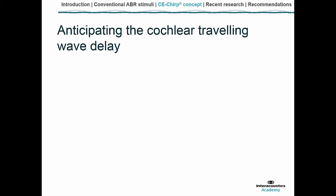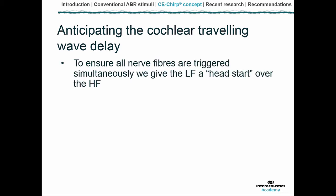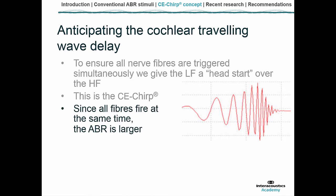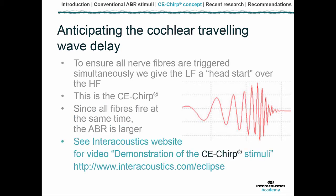The CE chirp was developed by Klaus Ebeling and Mani Don, who used the cochlear design as the basis of their modeling to compensate for temporal delays. It does this by something conceptually simple: as the traveling wave takes longer to reach the area responsible for low frequency fiber firing, the low frequencies are given a head start over the high frequencies. The result is that all nerve fibers are triggered at the same time, achieving neural synchrony, and the outcome is a larger ABR.